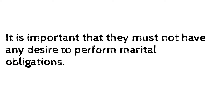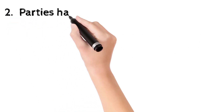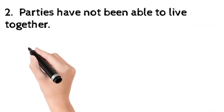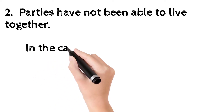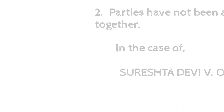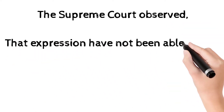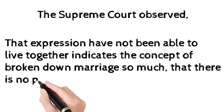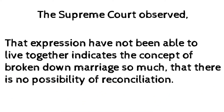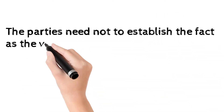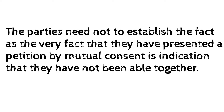The next requirement is that the parties must not have been able to live together. In the case of Sureshtha Devi vs Om Prakash, the Supreme Court observed that if the relationship has broken down so much that there is no possibility of them living together, this condition is fulfilled. Importantly, parties do not need to separately establish or prove this — the very fact that they are presenting a petition for divorce proves that they are not able to live together.